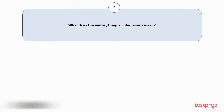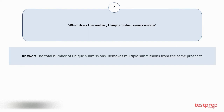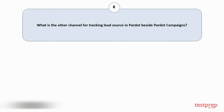Question number seven: What does the metric 'unique submissions' mean? Unique submissions is the total number of unique submissions, which removes multiple submissions from the same prospect.